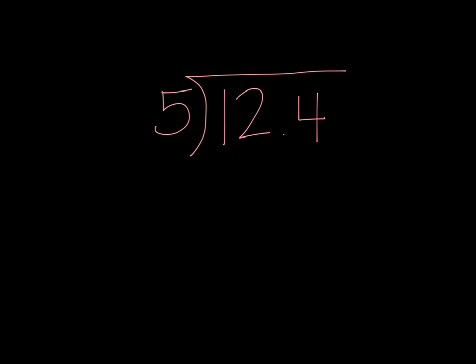Dividing a decimal number by a whole number is simple. All you have to do is place the decimal in the quotient or answer directly above where it is in the dividend and then divide like you normally would.